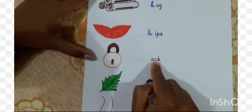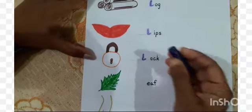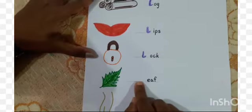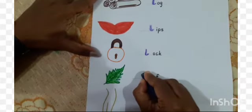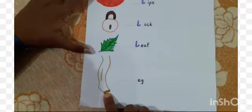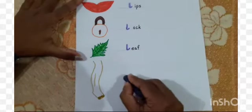L-leaf, L-leaf. You need to write the small letter L. And the last picture, L-leg, L-leg. So you need to write the small letter L.